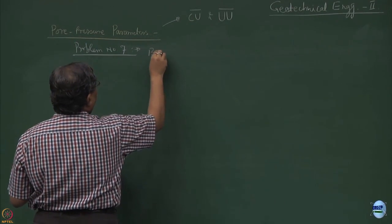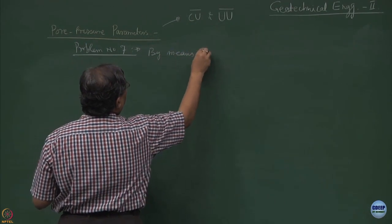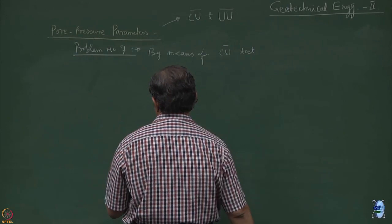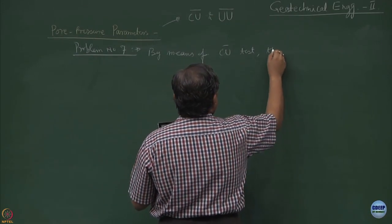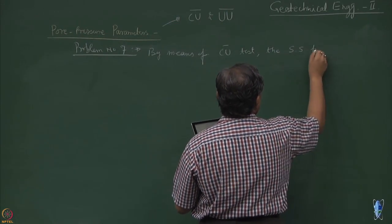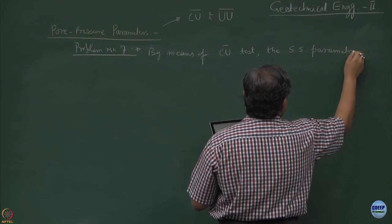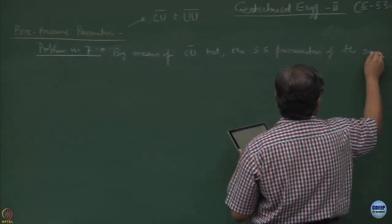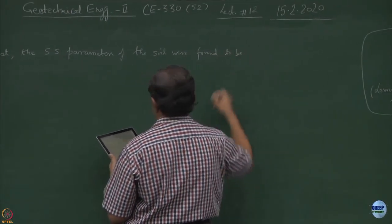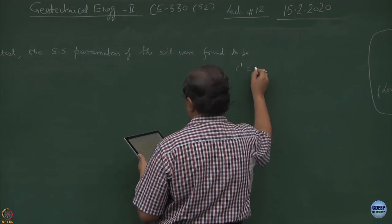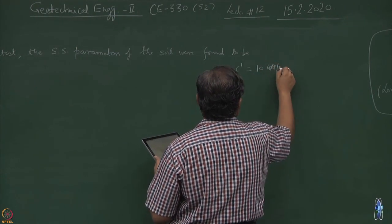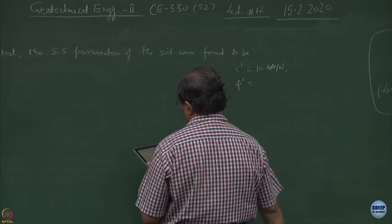By means of a Cu prime test, the shear strength parameters of the soil were found to be C prime equal to 10 kilo Newton per meter square, phi prime equal to 24 degree.